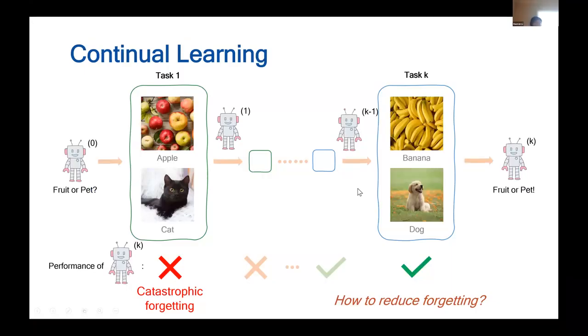I think all people here are already familiar with continual learning. We know that continual learning involves sequential learning of a list of different tasks and suffers from the problem of catastrophic forgetting.